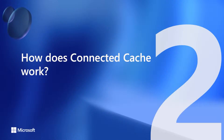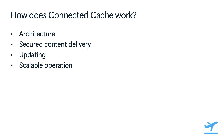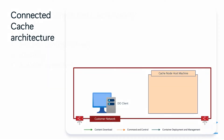Now let's talk a little bit about how Connected Cache works. First, we'll walk through the architecture of Connected Cache and get a good understanding of how everything works. Then we'll address some key topic areas that customers often find interesting, such as how is content delivered securely, how does my cache node stay up to date, and how can I operate Connected Cache at scale across multiple sites and thousands of Windows devices?